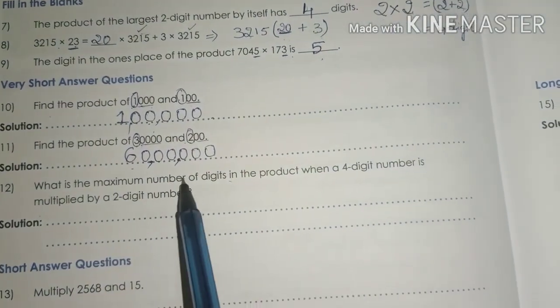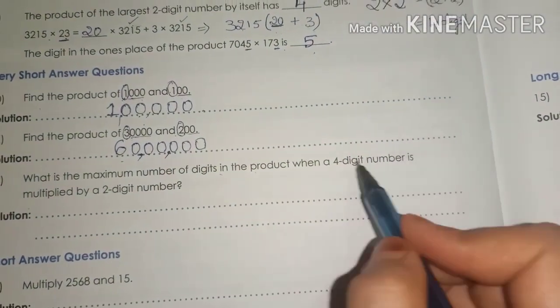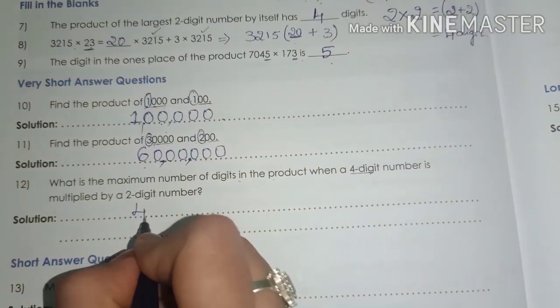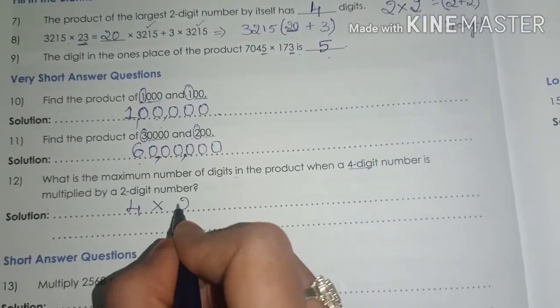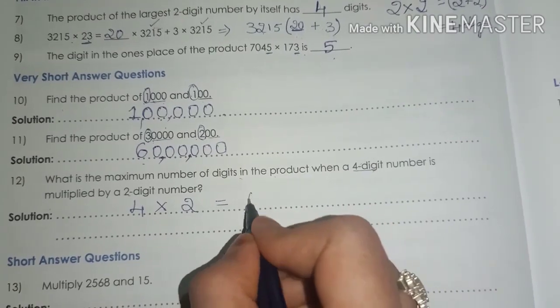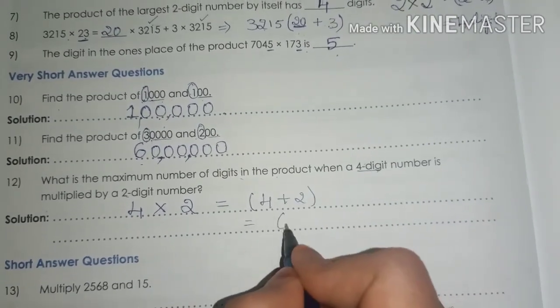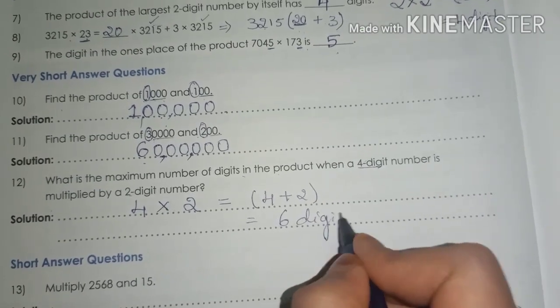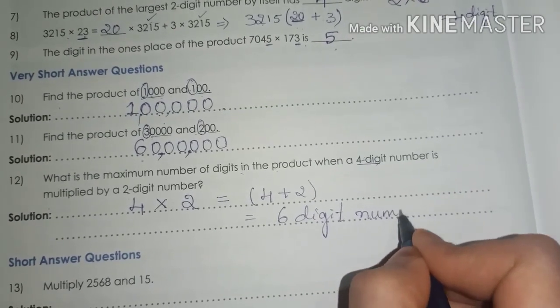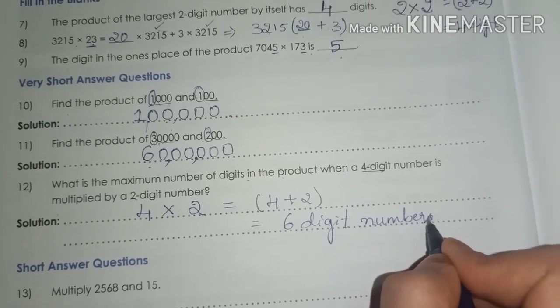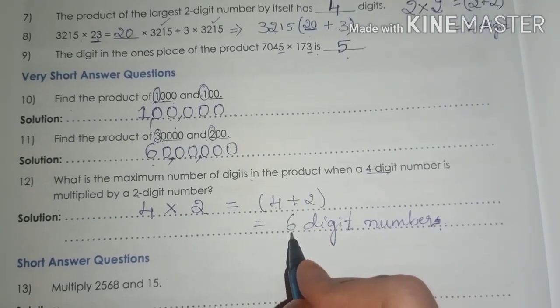So here they are asking, what is the maximum number of digits in the product when 4 digit number multiplied with 2 digit number? 4 plus 2. It should be a 6 digit number. Maximum, it should be 6 digit number. 4 plus 2 is 6.